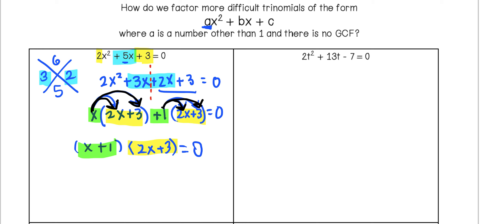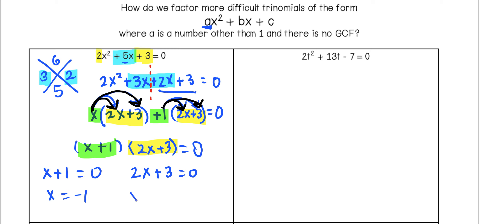This fully factored form helps us solve the problem to find our X values. We have two binomial factors set equal to zero. X plus 1 equals 0 gives X equals negative 1, and 2X plus 3 equals 0 gives X equals negative 3 halves. Both of those are solutions to our quadratic.